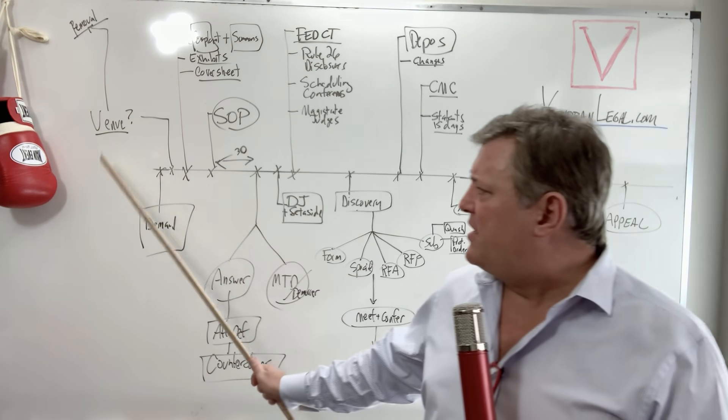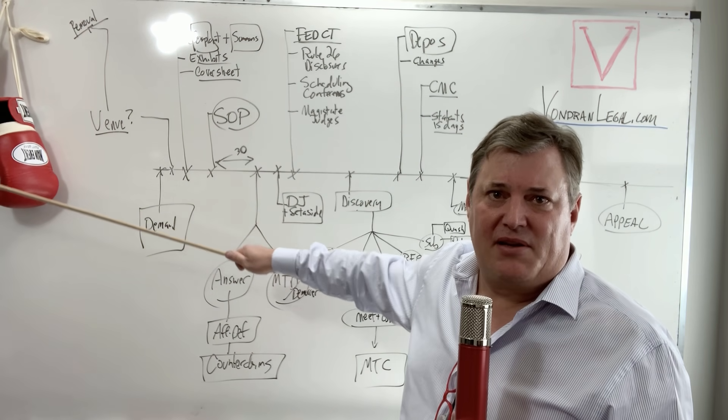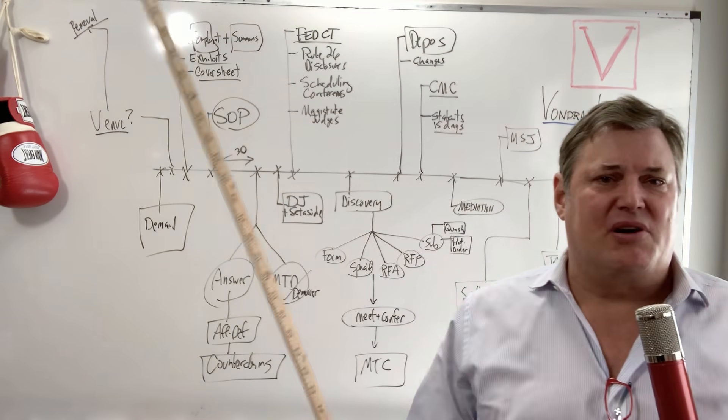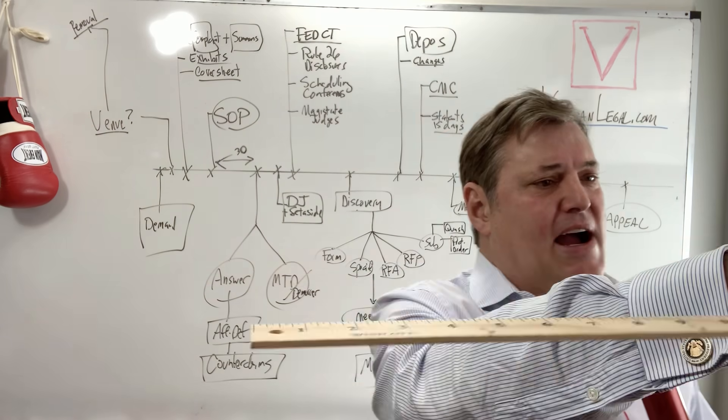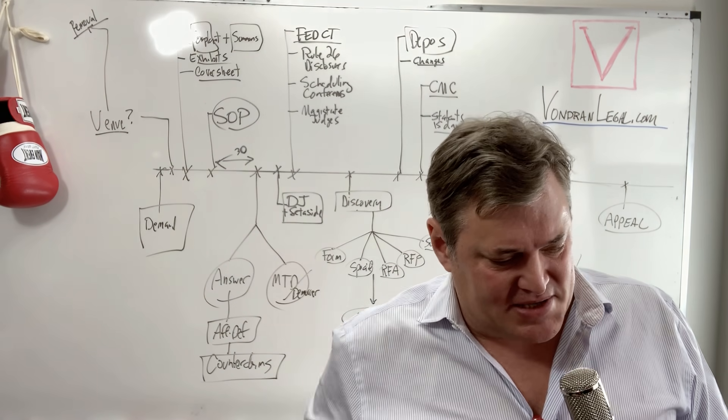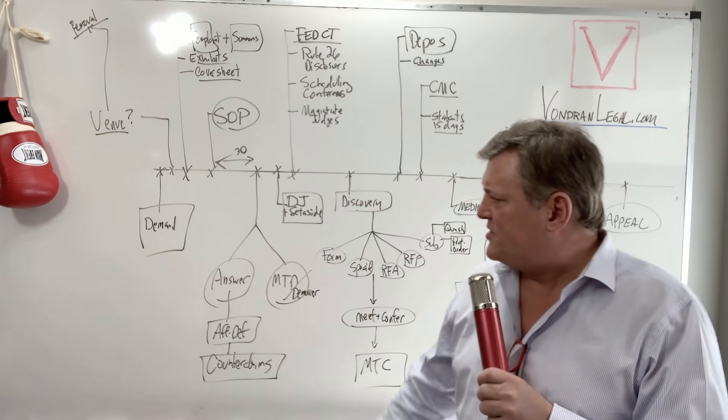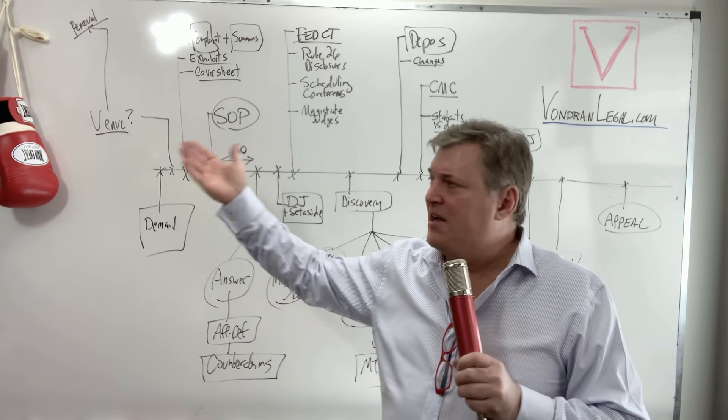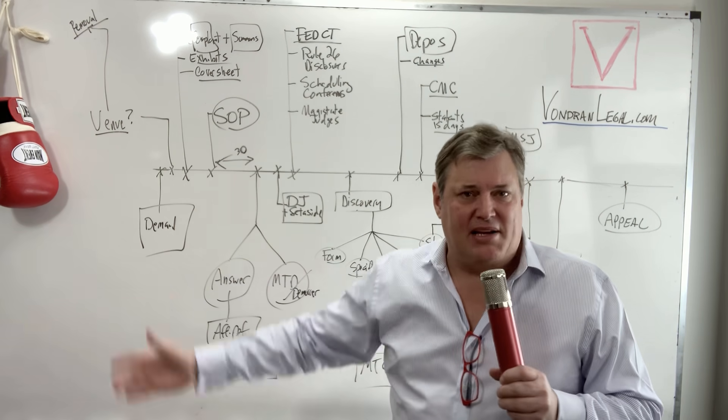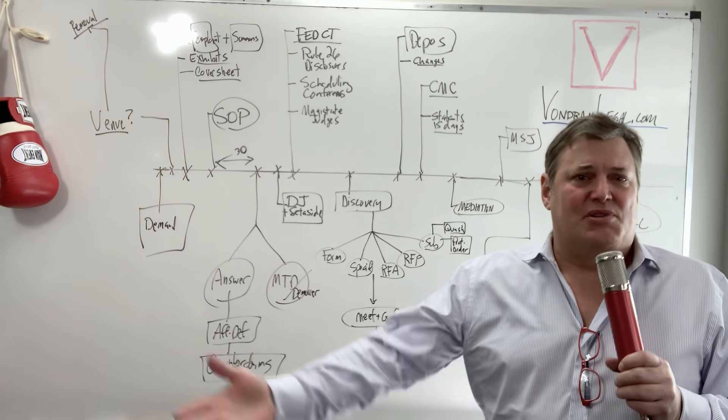Demand letter. So something happens over here. Something happens. Here's your boxing gloves. Something happens. Two parties are mad at each other. They try to work it out, and they just can't seem to work it out. So one person hires a lawyer, or they just send a demand letter. So first thing usually on the timeline is a dispute, some kind of demand, and they can't resolve it.